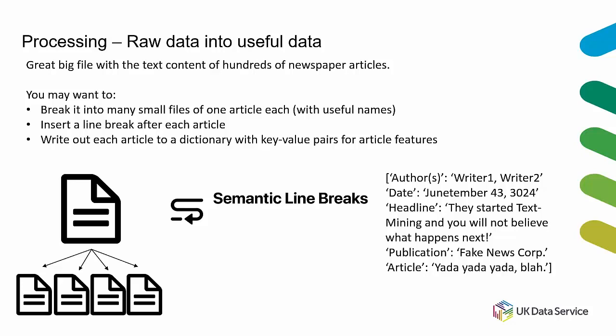You could also turn each article into a dictionary entry with key-value pairs for things like author, title, and date. These are all potentially useful ways to process raw data into something suitable for text mining. Separate files are useful if you want to compare document content; a spreadsheet is more useful if you want to analyze articles as entities; and key-value pairs are useful if you want to discover relationships between features over time.